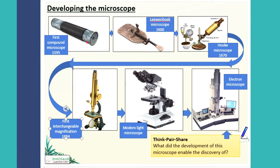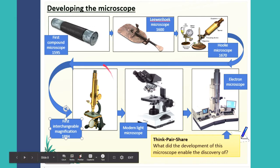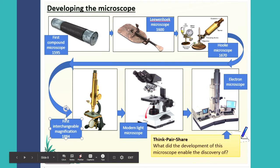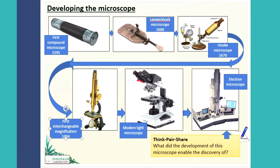The first compound microscope was around 1595 — just a body tube with a lens at one end. Leeuwenhoek's microscope from the 1600s looked like a small paddle placed near his eye. Hooke's microscope already had a body tube. A later model had the first interchangeable magnification for the objective lens. Then came the modern light microscope with its own rechargeable light source. The electron microscope uses the action of electrons to create the image of the specimen.